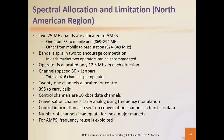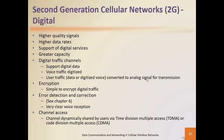Second generation cellular networks were designed to be more digital-based — what we call 2G. They were the early stage of digital transmission, using digital encoding techniques, and were developed to address higher quality signal needs, higher data rates, support of digital services, and greater capacity. Within digital traffic channels, they also support digital data, voice, and traffic digitization. User traffic for data or digitized voice was converted to analog signal for transmissions that needed it.